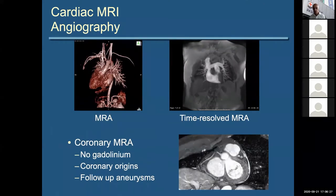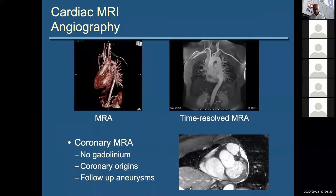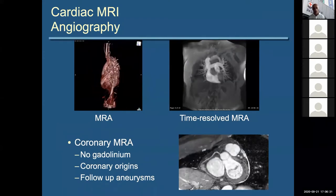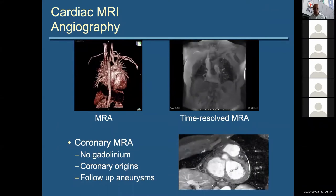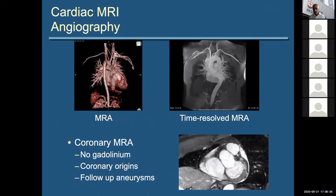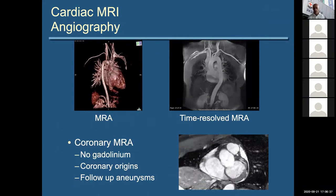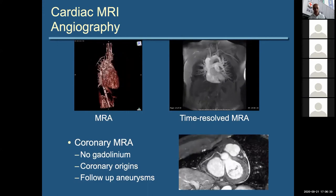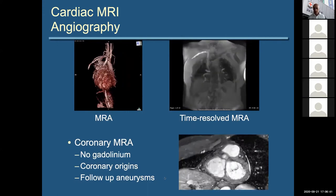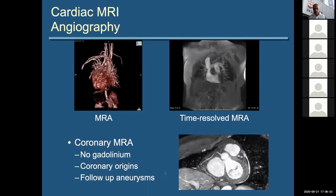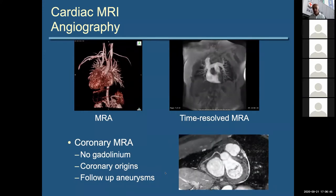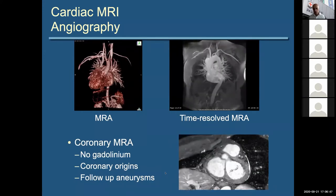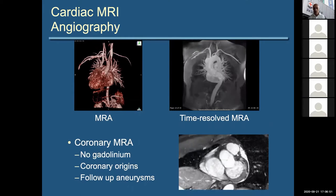You can also do things like MRA — with or without gadolinium angiography. For coronary MRA, CT is superior. What we tend to use MRA for is things like an add-on to look for coronary origins or to follow up coronary aneurysms.